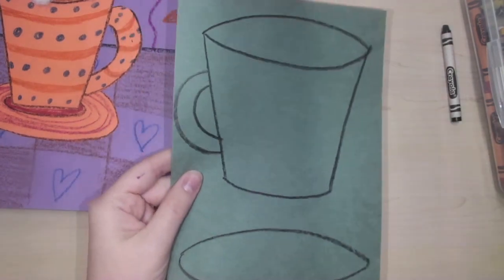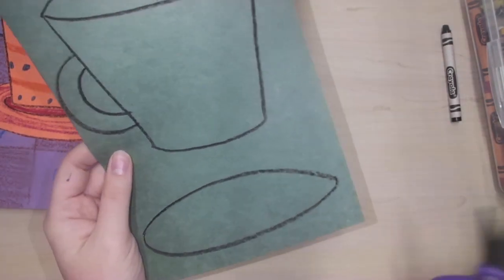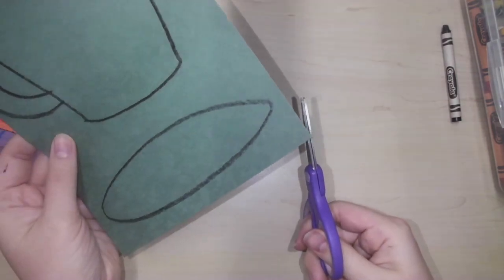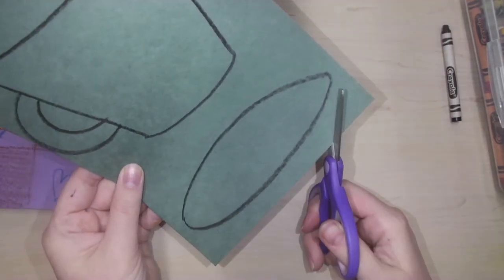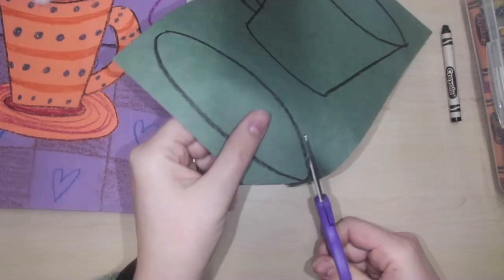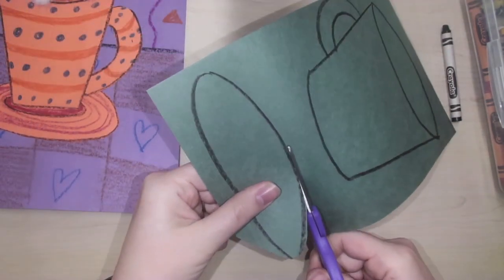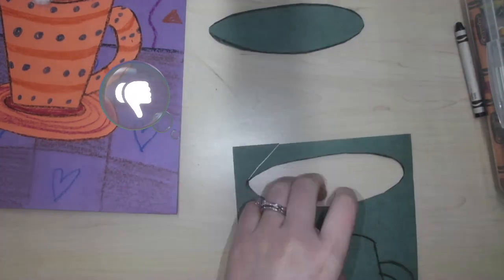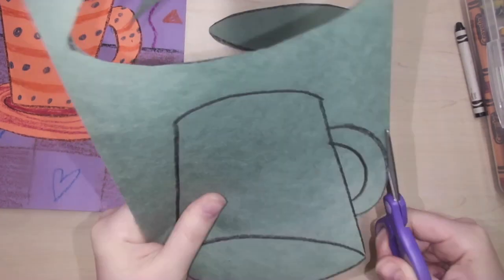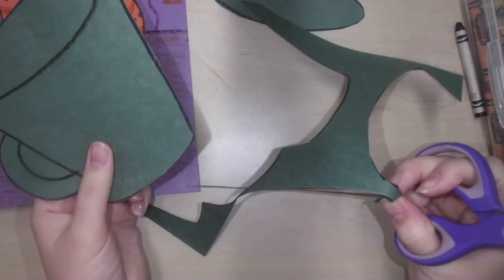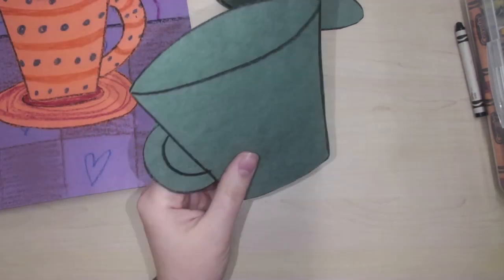Next, let's cut out these two shapes. Remember, your scissors are always pointing away from you and your paper is going to turn. So when I'm cutting my saucer, look how I'm turning my paper, but keeping my scissors straight ahead. I'm going to make sure my scraps get in my table trash basket.